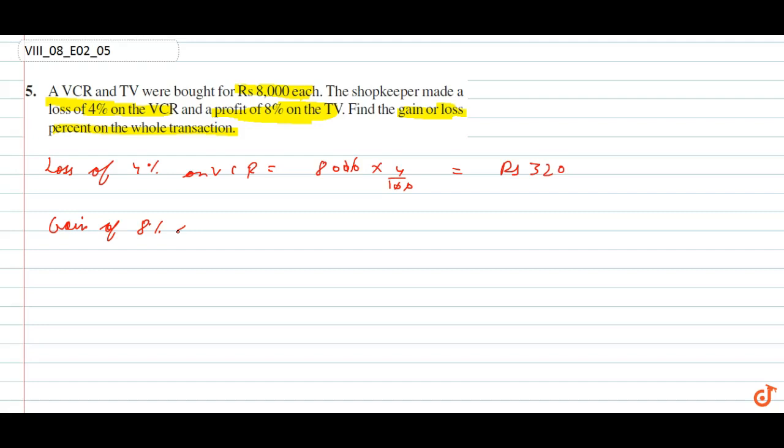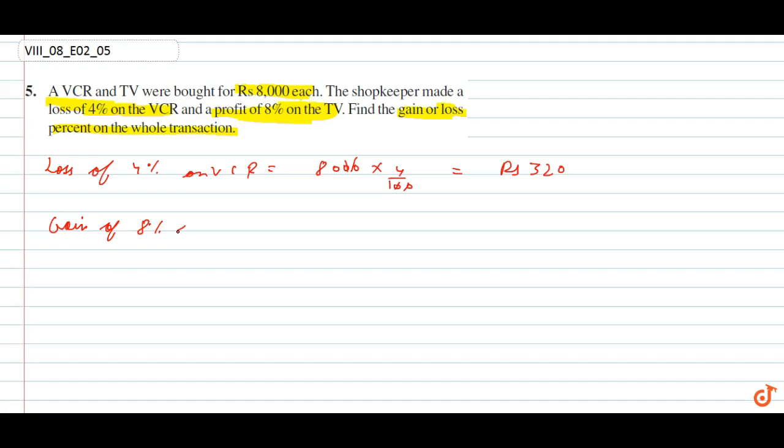Now, total gain on what? Both items were sold together. What is the total cost? 16,000. Profit and gain, how much is it? Rupees 320 on both.